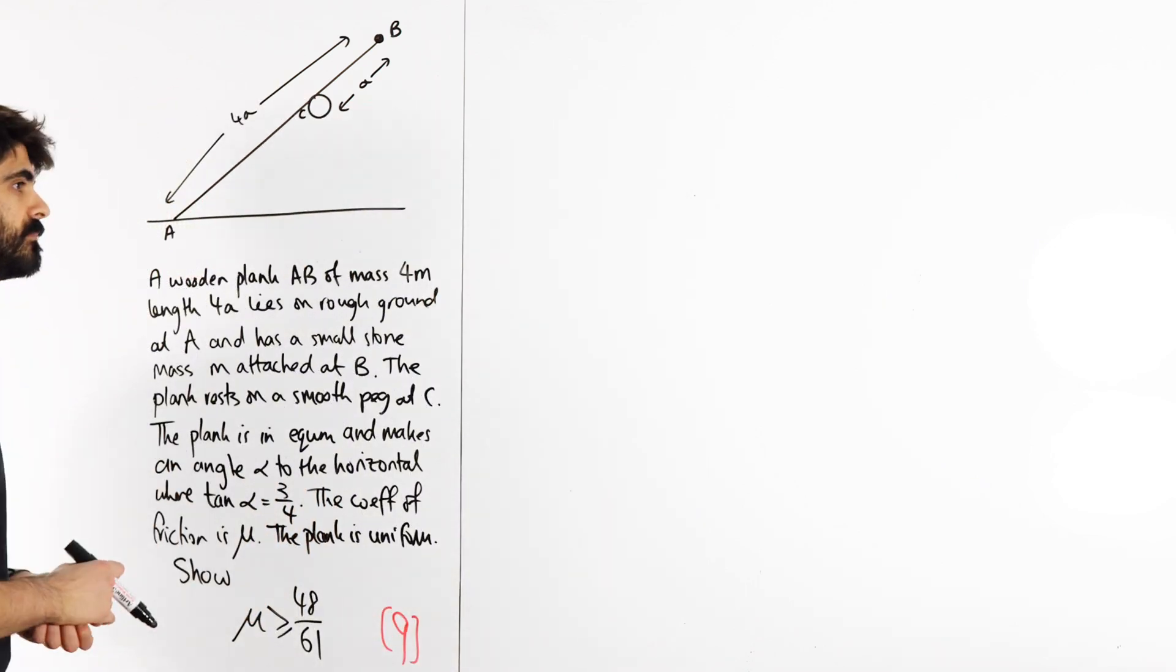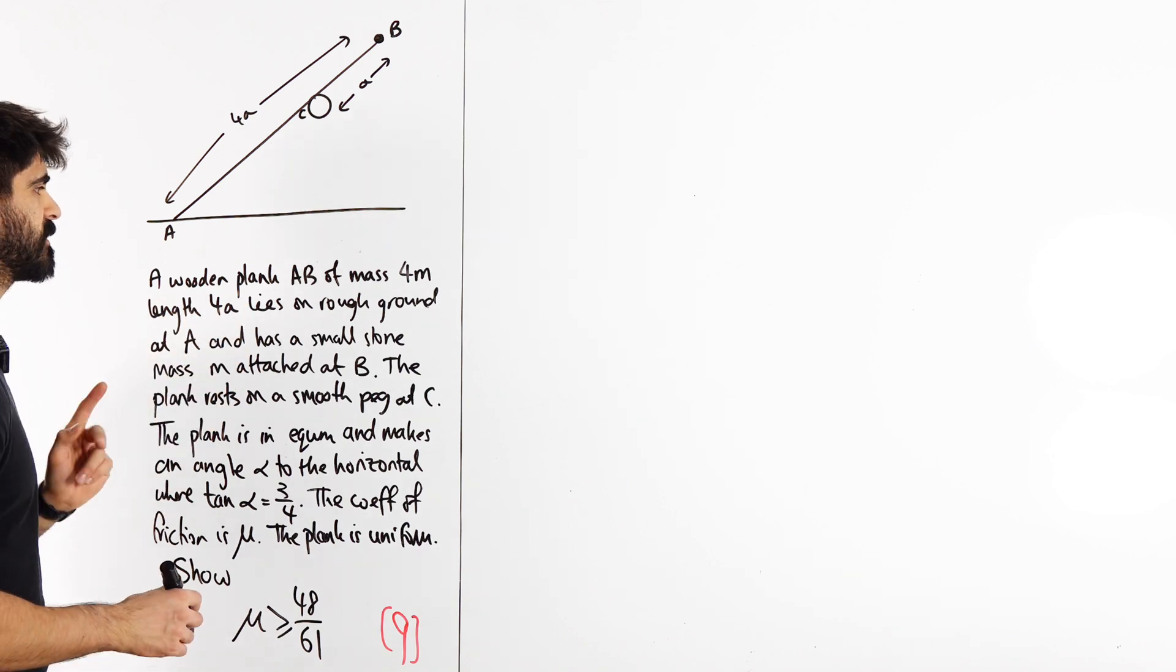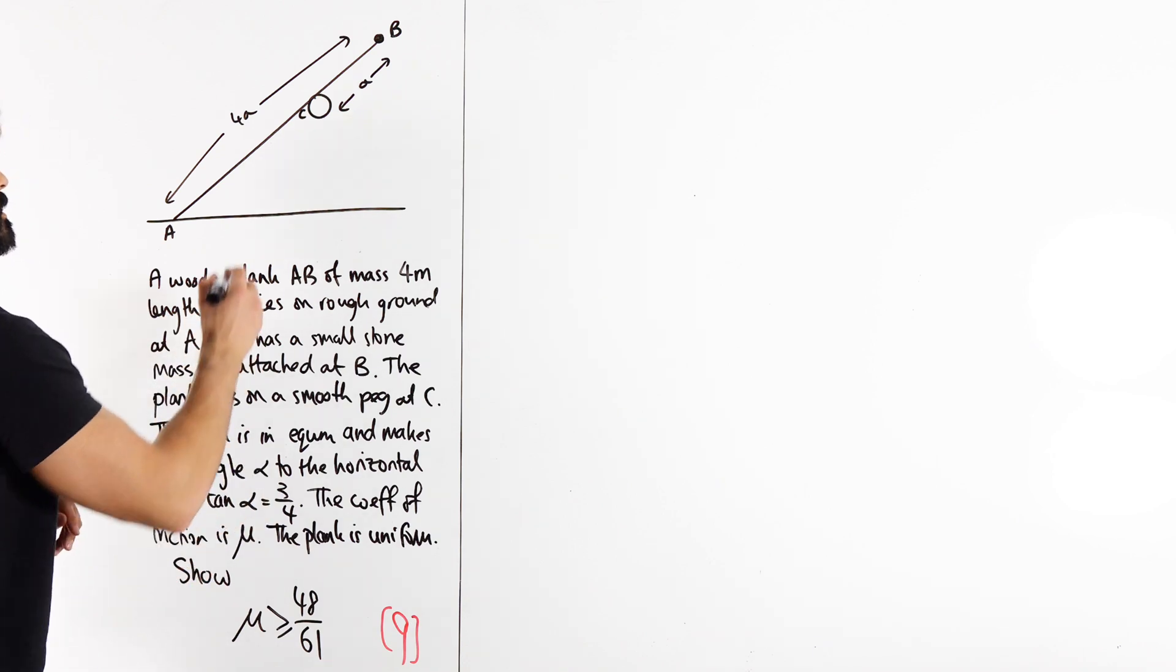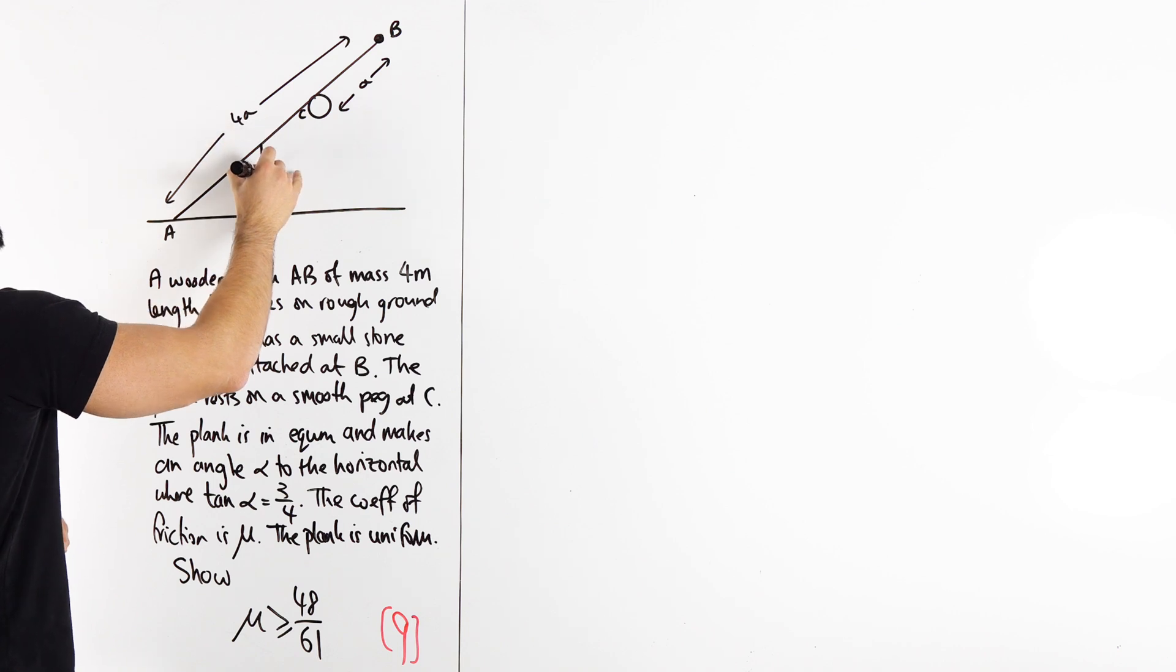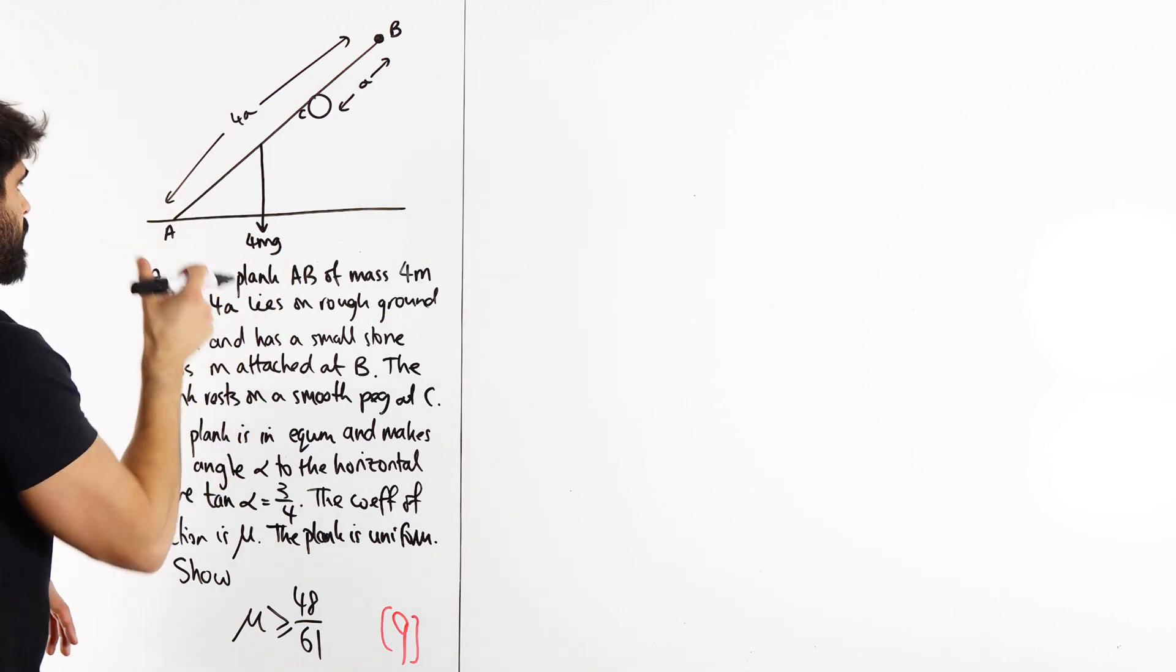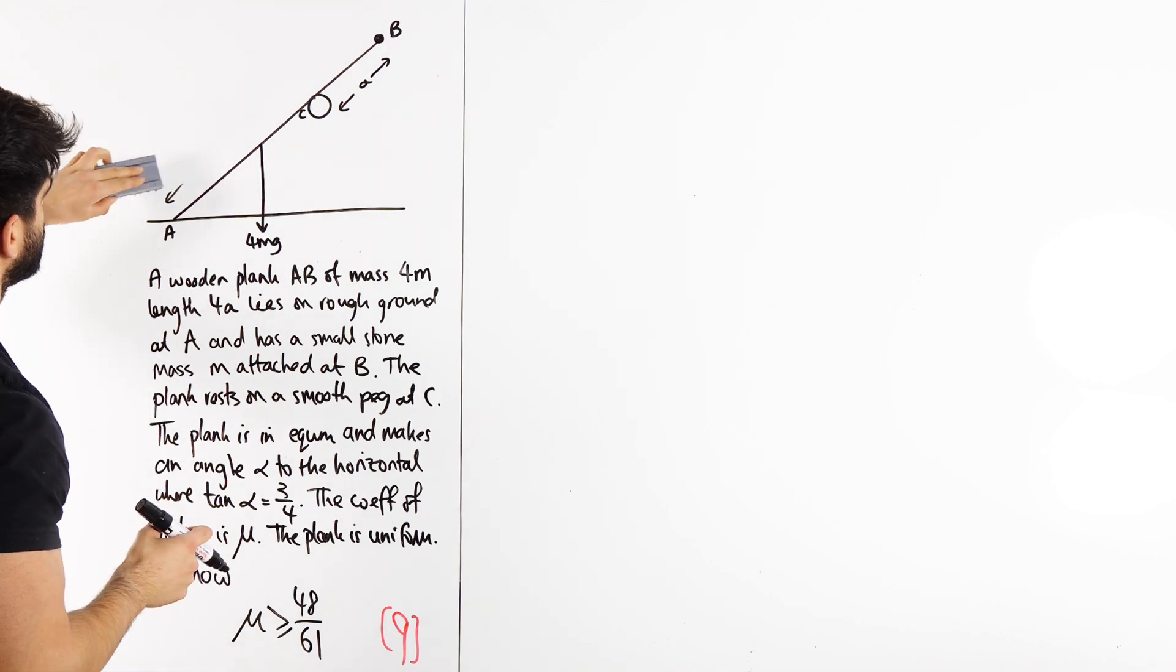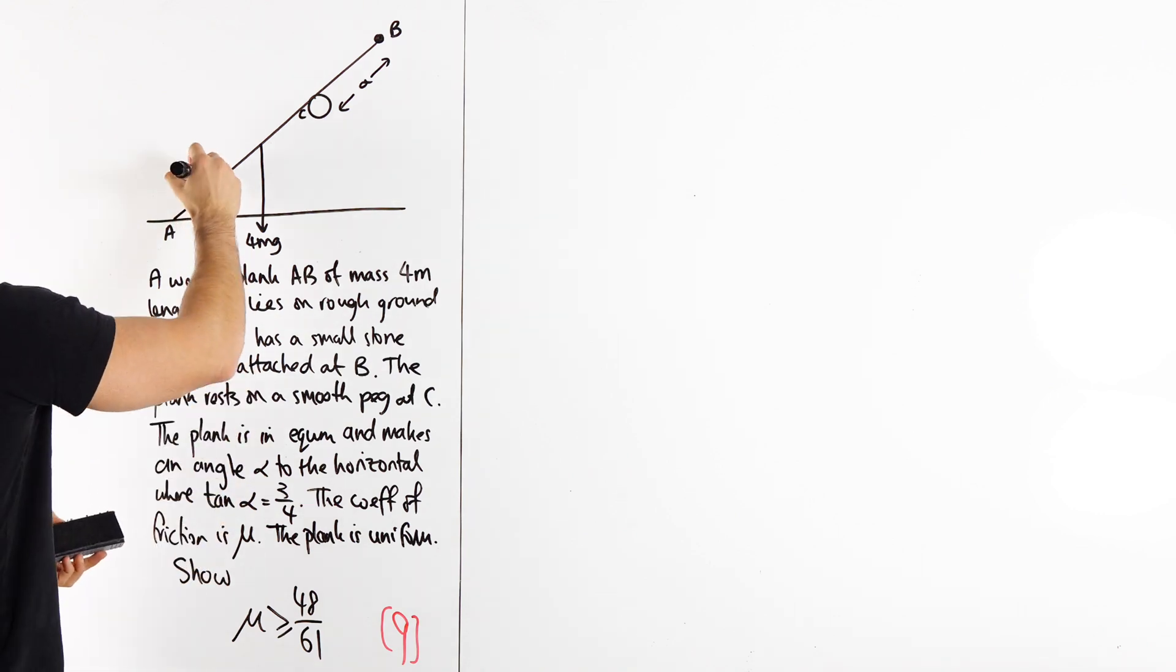Alright, so let's just go read again and start labelling. A wooden plank AB of mass 4M, and it did say it was uniform, so that's going to be right down the middle. So we're going to put 4MG. Now, right down the middle means we have 2A. So in the exam they like to put this kind of nonsense on the diagram that you could have just labelled yourself.